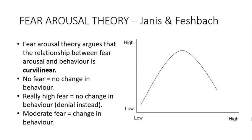Along came Janis and Feshbach, who came up with the fear arousal theory, which argues it's not a positive correlation but a curvilinear relationship. When there's no fear or very little fear in a persuasive message, people won't change their behaviour — there's no motivation. When there's really high fear in a message, that doesn't help either, because people stick their head in the sand, go into denial, think they can't do anything or it'll happen to someone else. So actually, where you've got a message with moderate fear, that's where you get the most behaviour change — that's called a curvilinear relationship.